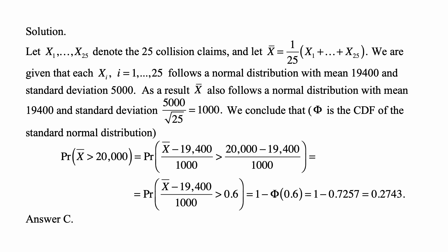We are given that each xᵢ follows a normal distribution with mean 19,400 and standard deviation 5,000. Well then, it follows that x-bar follows a normal distribution with mean 19,400 and standard deviation equal to 5,000 divided by square root of 25.